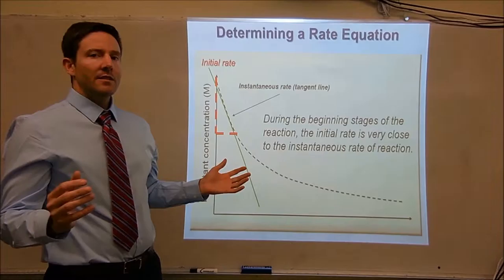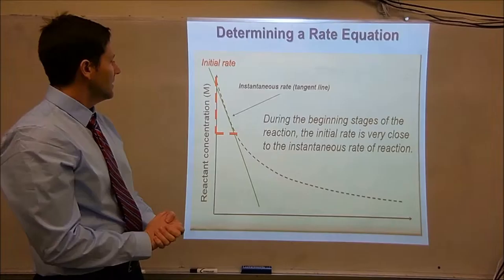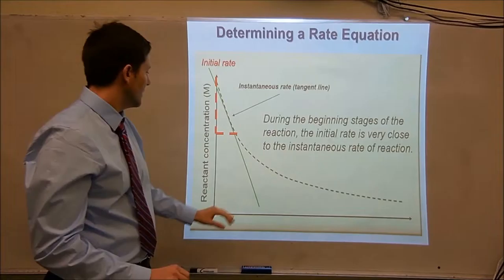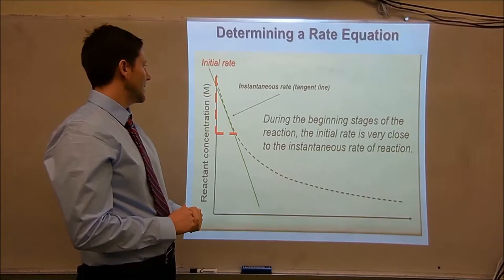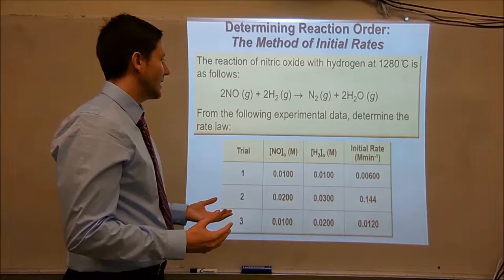At the beginning stages of a reaction, the initial rate is very close to the instantaneous rate of reaction. You draw a tangent line any place along the curve of the reaction concentration and the slope of that will be your rate of the reaction. This is useful information because you can use it to determine the order of a reaction.